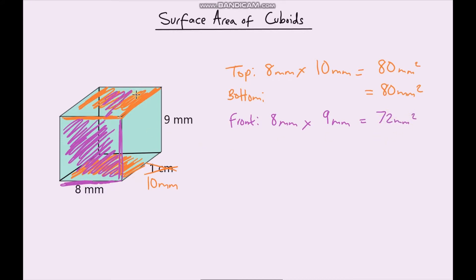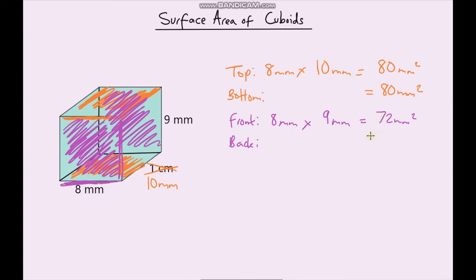And then just like the front, we look at the back. The back is also going to be 8 times 9, which is also 72 millimetres squared.